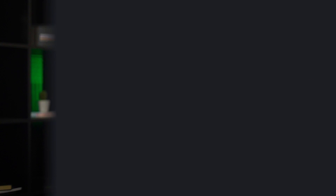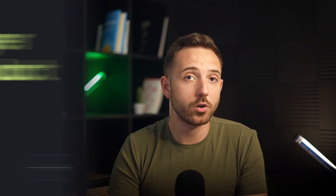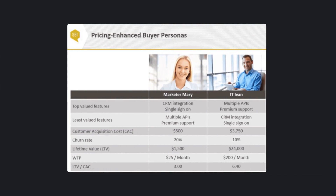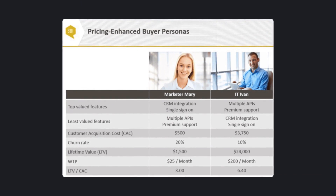This moves us to the next important issue: how to make buyer personas for product pricing. When you work on pricing, personas will help you figure out what features different groups of people find most valuable or least valuable, and what they would be ready to pay for them. You'll be able to build a pricing grid that contains a satisfying option for each group of users. If defining your specific value proposition is something you struggle with, check out my video about it before creating buyer personas. Keep in mind that SaaS and e-commerce startups have more in common with each other when buying software than an e-commerce startup and Amazon. That's why marketing and pricing personas can be segmented differently.